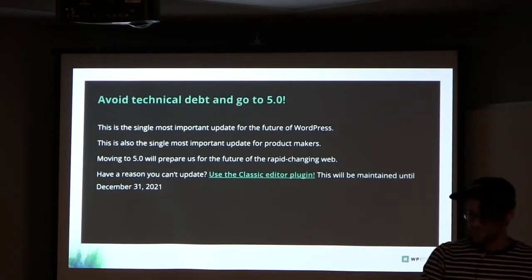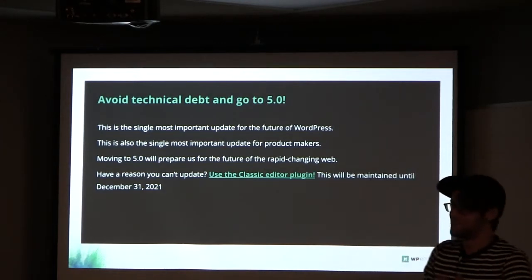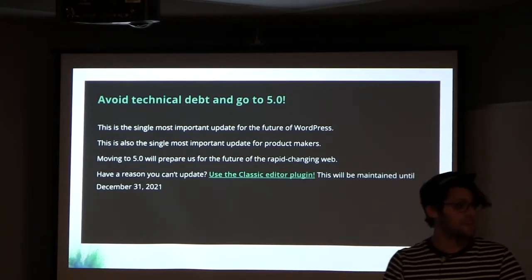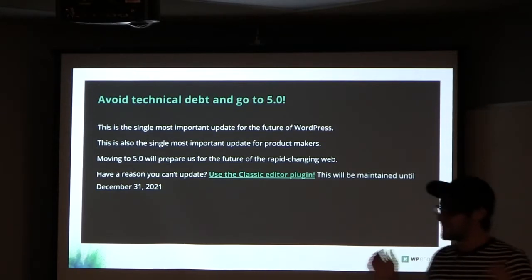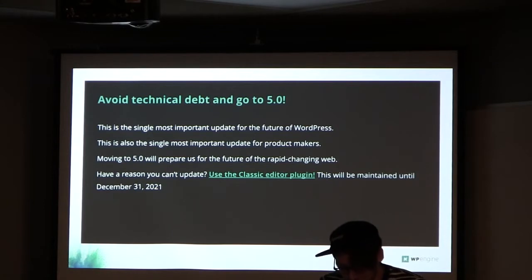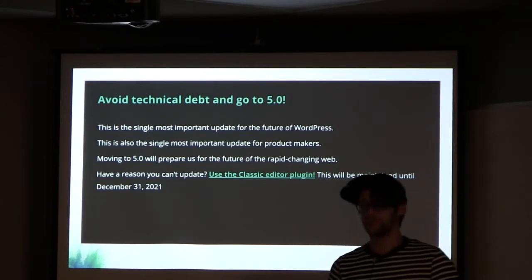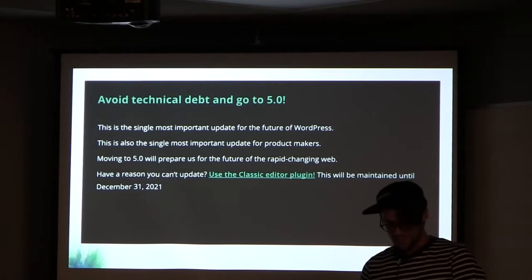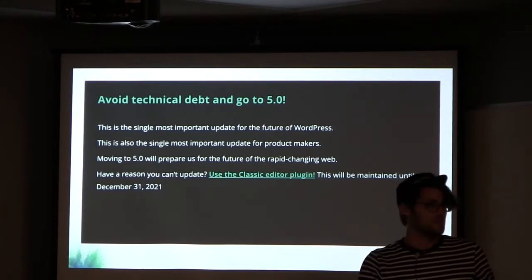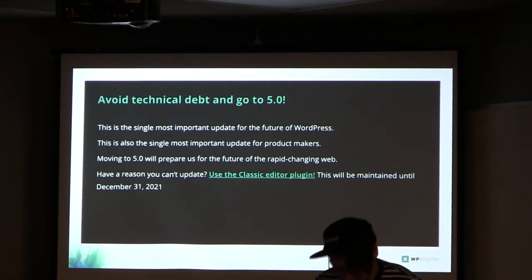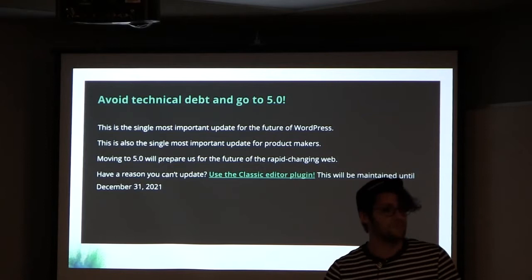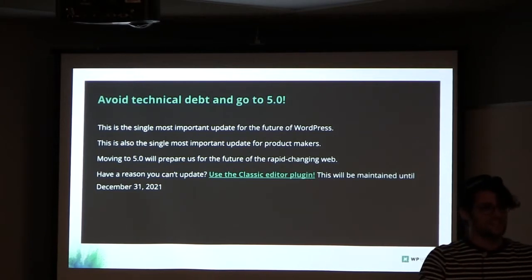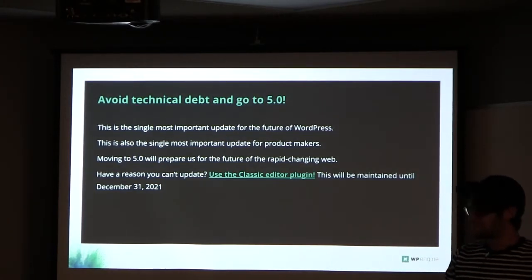I want to give this disclaimer: avoid technical debt and go to 5.0. It doesn't matter if you're even ready for it. Just go to 5.0, and if you're not ready and you don't have time to test, install the classic editor. The classic editor will be maintained until the end of 2021. 2022 is when we'll probably get an idea of when that's over, and I don't anticipate it even being over then. Imagine all the people that can contribute going forward or make their own classic editor plugin. This gives us all time to ease into Gutenberg. I don't know too many people that maintain the exact same site design for more than two years, so at least we get two years to build a new site.